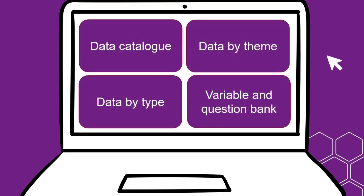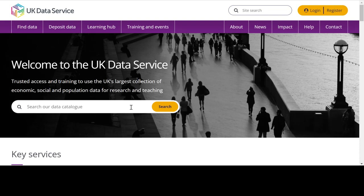Now you have an idea of your data needs, you can start to search for your data. There are a few ways you can do this. You can use the UK Data Service catalogue search tool to search for datasets by name or by entering keywords. For example, if we type in 'Crime Survey for England and Wales' and press enter or click the search button, all results matching this will appear.